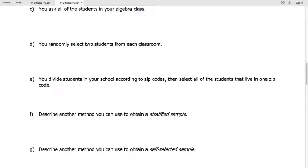Okay, last few here. Part C, we ask all the students in your algebra class. Well, it's really convenient to ask your algebra classmates because you're already in algebra. We then call this a convenience sample. It's really easy to get a hold of them because you're already in class with them.